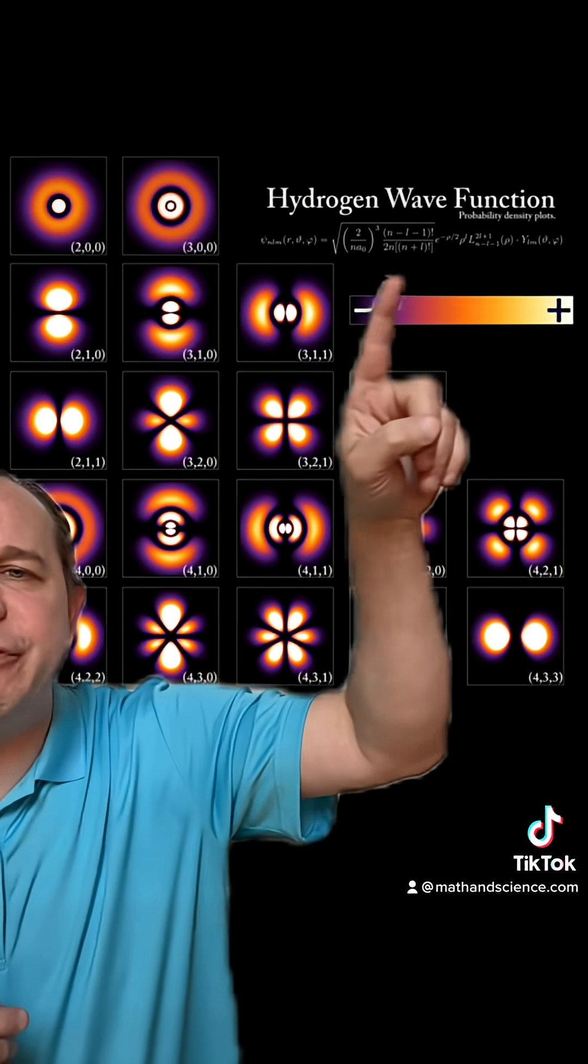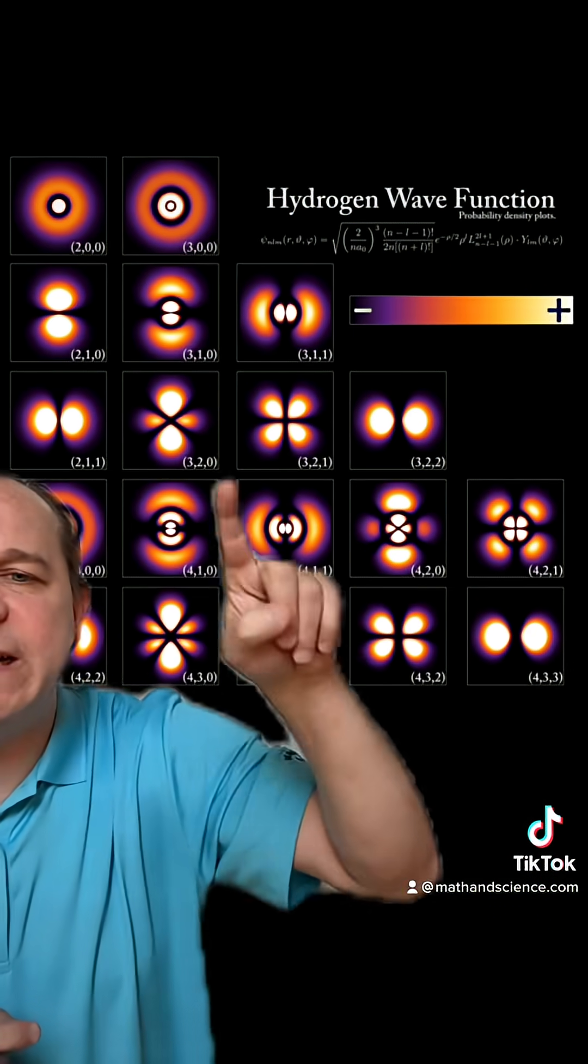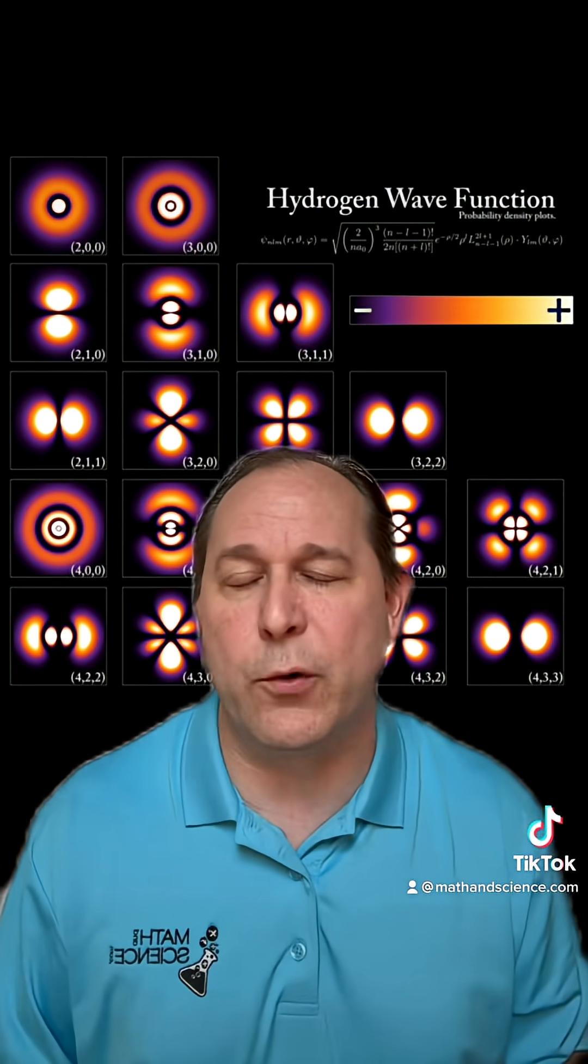So this is the hydrogen wave function. And these are basically different solutions of the Schrödinger equation in quantum mechanics, which give these guys. So back in algebra, you used to solve equations and get multiple solutions all the time, like for the quadratic formula.